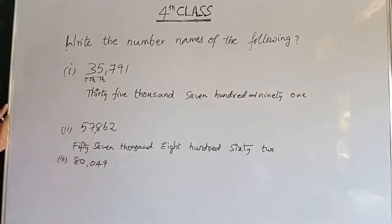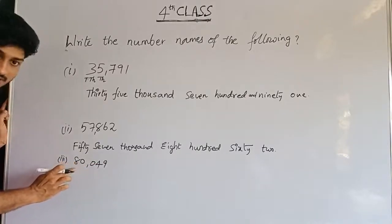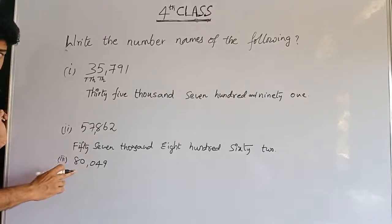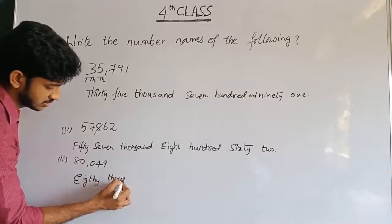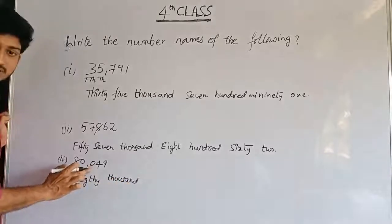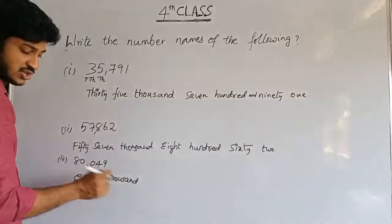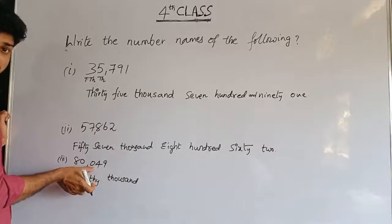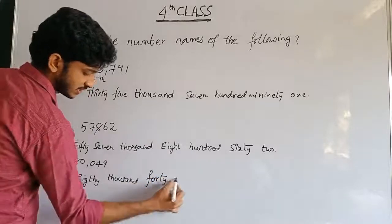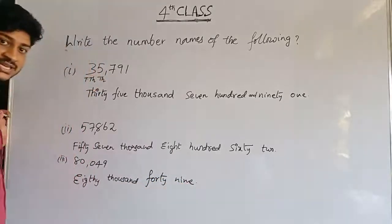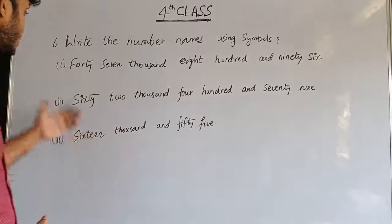See another number: 80,049. Total thousands are eighty-thousand. Zero is in hundreds place, meaning total hundreds are zero — so no need to write hundreds here. Four is in tens place, so forty. And nine in ones. So 80,049 is eighty-thousand and forty-nine.